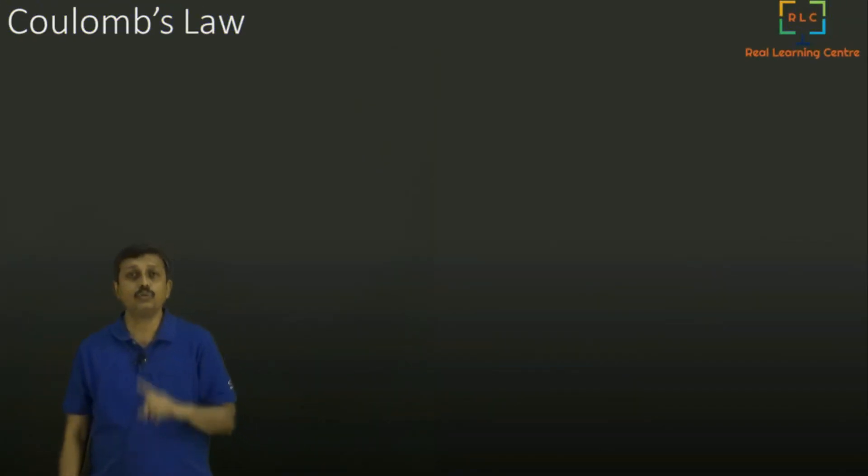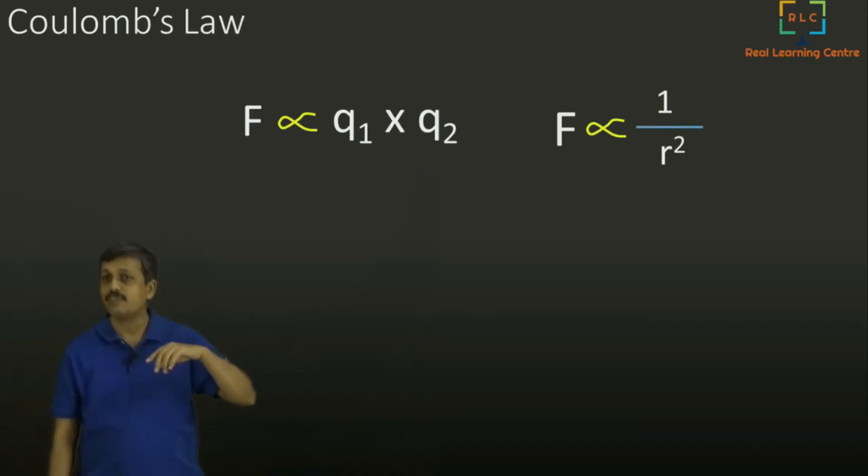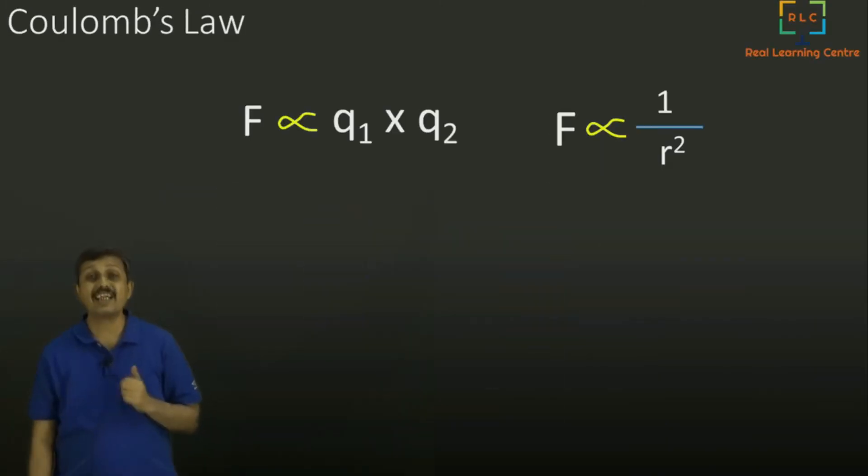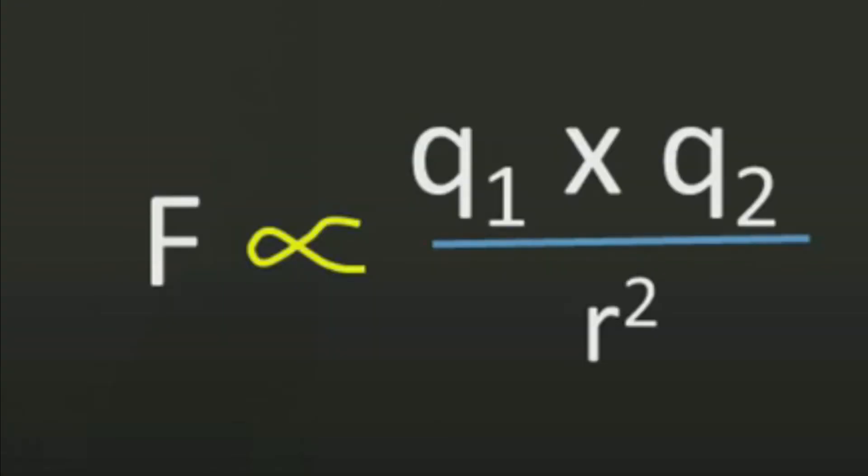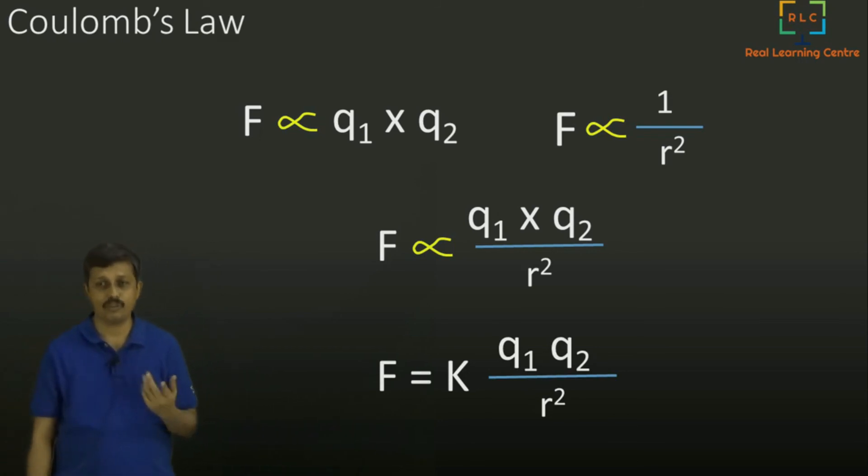There are two rules. One of them is force is proportional to Q1 into Q2. The other one we figured out was force is proportional to 1 by r square. If we club these two things together, we say force is proportional to Q1 Q2 divided by r square. Now generally whenever we have a proportionality, we replace it with a constant and an equal to. We can write F equals k into Q1 Q2 by r square. And this is an important formula to remember.